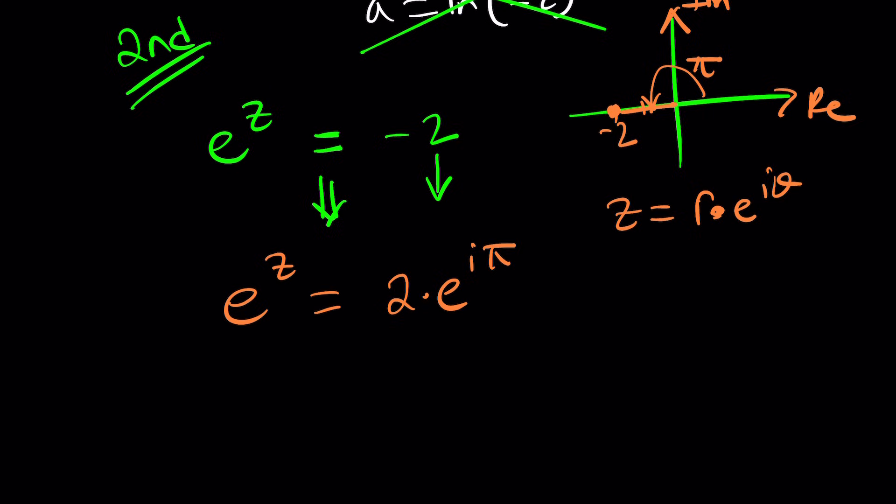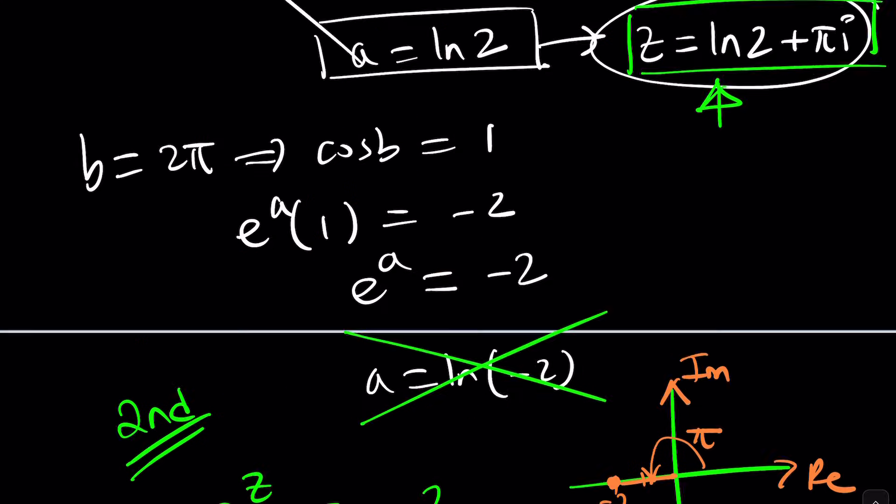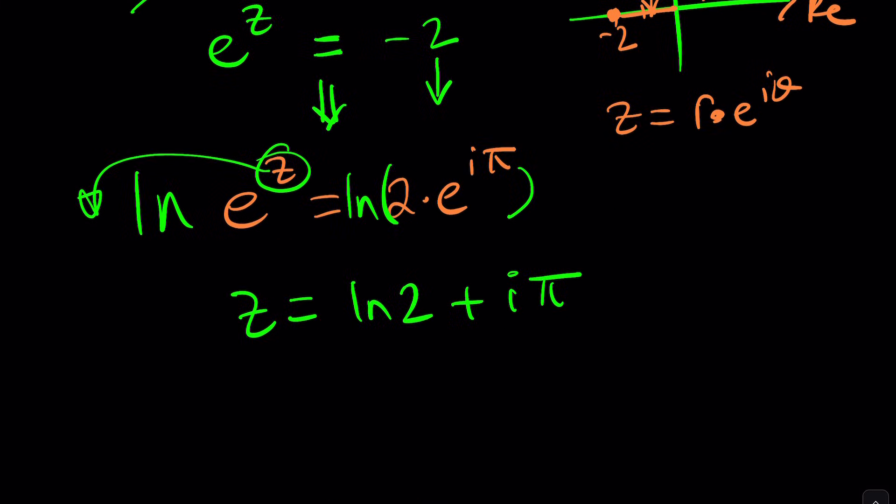And when you set it equal to e to the z, and then natural log both sides, we can get the answer right away, can't we? So z is going to drop, and ln e is 1, so z is going to be ln 2 plus ln e to the i pi, which is i pi. Did we get the same thing? Yay, great, so success.